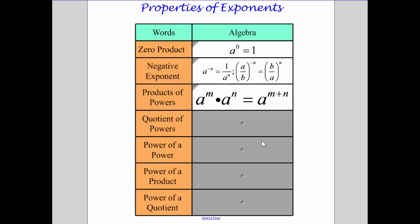When you have the same base and you're multiplying, you can add your exponents. When you're dividing, you subtract the exponents. When you have a power to a power, you have to multiply the exponents.